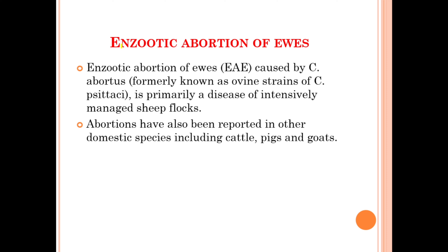We will discuss the different clinical conditions produced by the different pathogenic members of the Chlamydophila. The first one is enzootic abortion of the ewes, caused by Chlamydophila abortus, formerly known as the ovine strain of Chlamydophila psittaci, which is primarily a disease of intensively managed sheep flocks. Abortions have also been reported in other domestic species including cattle, pigs, and goats.